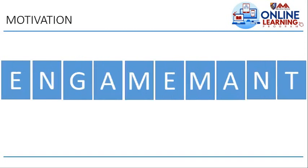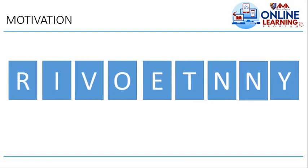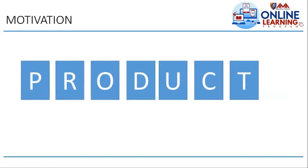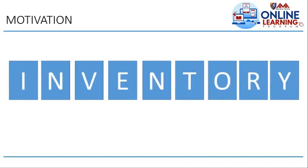For the third word, it looks like 'engagement' but it is not — the correct answer is 'management.' For the next word, the correct answer is 'overhead.' And the last word, the correct answer is 'inventory.' So the five words are: product, resources, management, overhead, and inventory. Thank you to those who participated.